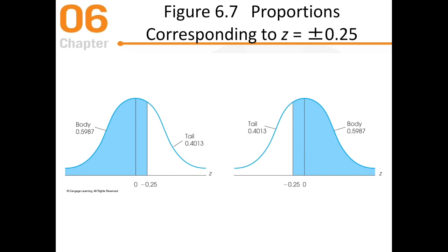For z-scores corresponding to plus or minus 0.25: on the positive side, the tail is 0.4031 and the body is 0.5987. Watch how it flips for a negative z-score: at negative 0.25, the tail is 0.4 and the body is 0.59. The tail switches sides depending on whether the z-score is positive or negative.